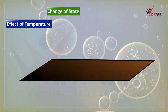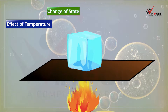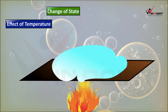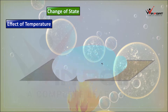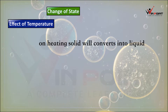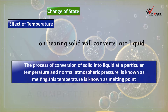Effect of temperature: when we heat a solid, it converts into liquid form. This process is known as melting. The process of conversion of solid into liquid at a particular temperature and normal atmospheric pressure is known as melting, and that particular temperature is called the melting point. For an ice cube, the melting point is 0 degrees Celsius — at 0 degrees Celsius, it converts into liquid water.